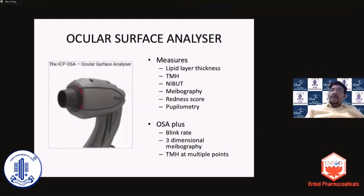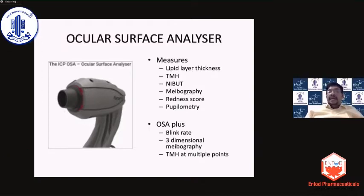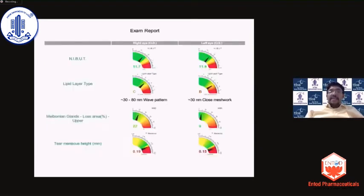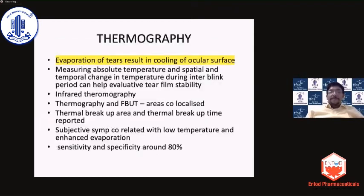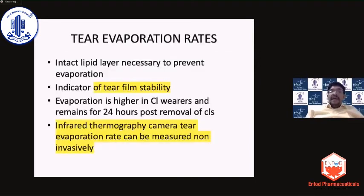You also have equipment like the Oculus Surface Analyzer, which adds an interference fringe pattern to the diagnostic kit, giving you lipid layer thickness, tear meniscus height, breakup patterns, meibography, and redness score. The printout uses a traffic signal approach — green is normal, yellow is borderline, and red is abnormal — making it easy even for the patient to understand their results. Investigations like thermography and tear evaporation rate are more research-based tools and have not come into routine clinical practice.